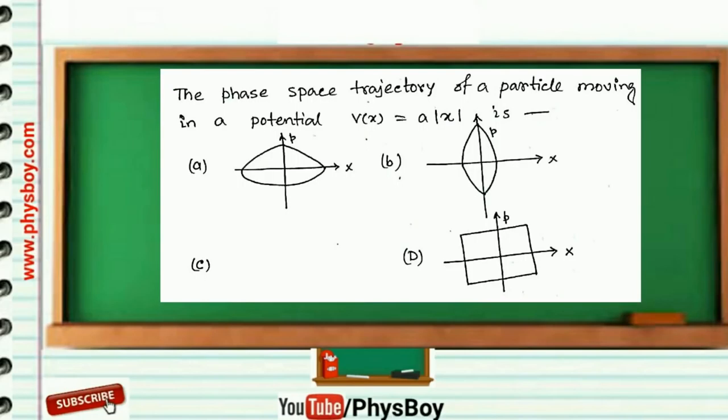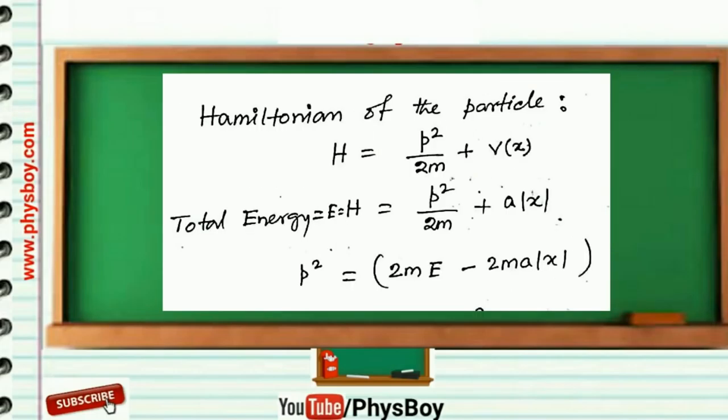The question was: the phase space trajectory of a particle moving in a potential V(x) = a|x|. The Hamiltonian of the particle moving in the given potential V = a|x| can be written as this equation.